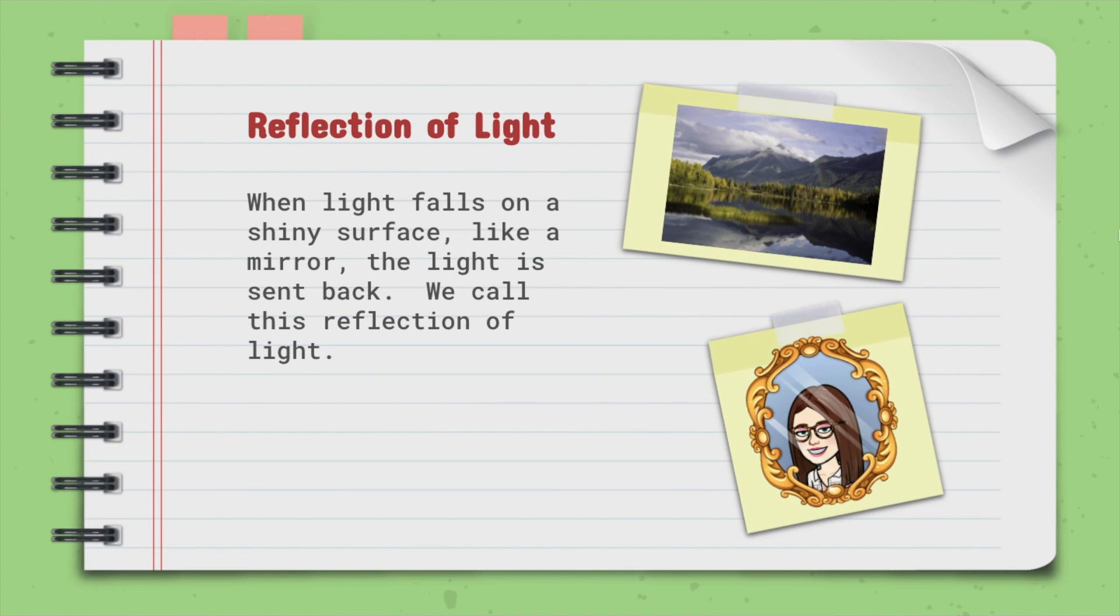Reflection of light. When light falls on a shiny surface like a mirror, the light is sent back. We call this reflection of light. Like the diagram below. So when I look in a mirror, I'm seeing the light being reflected. And up there in Alaska at Reflections Lake, you can see the reflection of the mountain in the shiny, clear water below. That's really cool how that works.